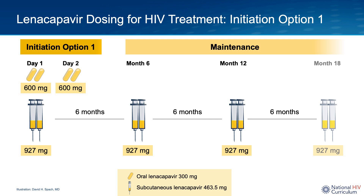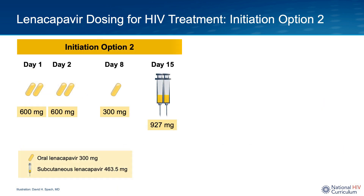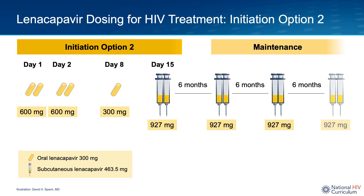With initiation option two, the patient takes two 300 mg linacapavir pills on day one and again on day two, followed by a single 300 mg tablet on day eight. On day 15, they receive two 1.5 ml subcutaneous injections. The option two schedule is used infrequently since it's more complicated than option one. As with option one, maintenance dosing then consists of two 1.5 ml subcutaneous injections of linacapavir for a total of 927 mg every six months, with the first maintenance dose given six months after the day 15 initiation injections.